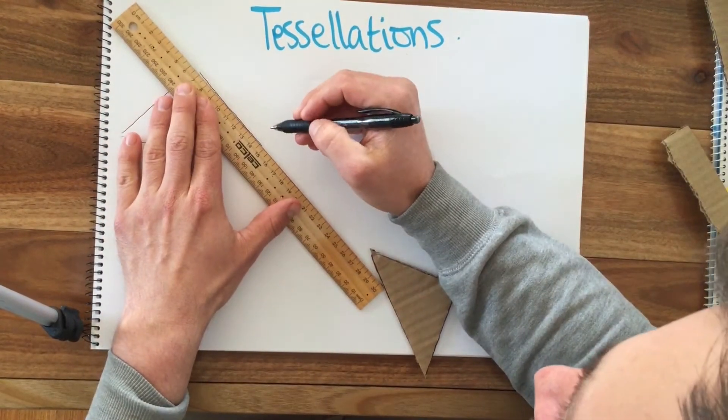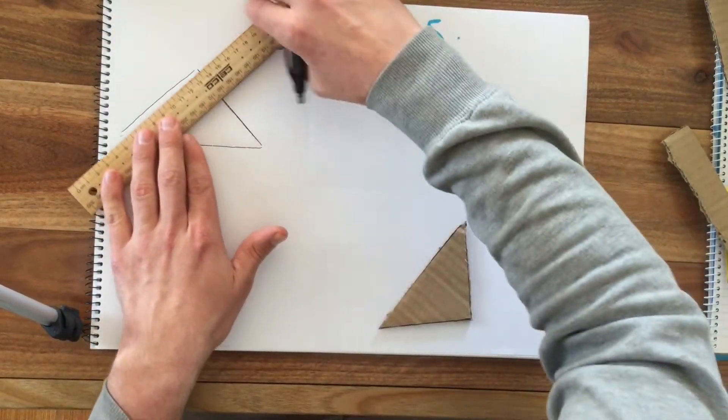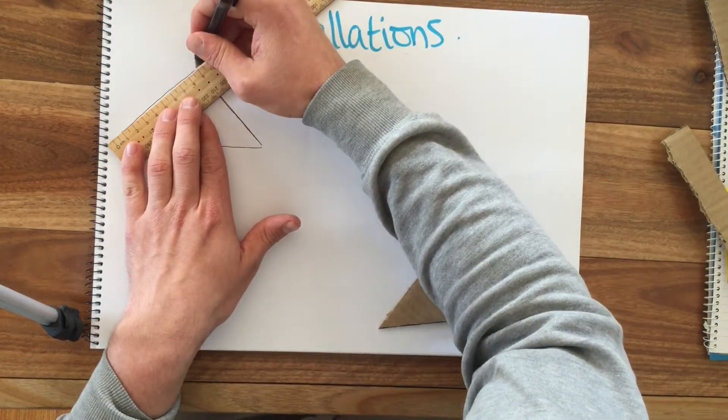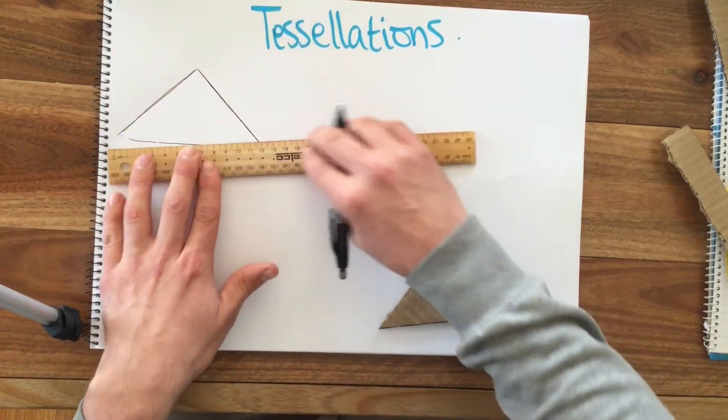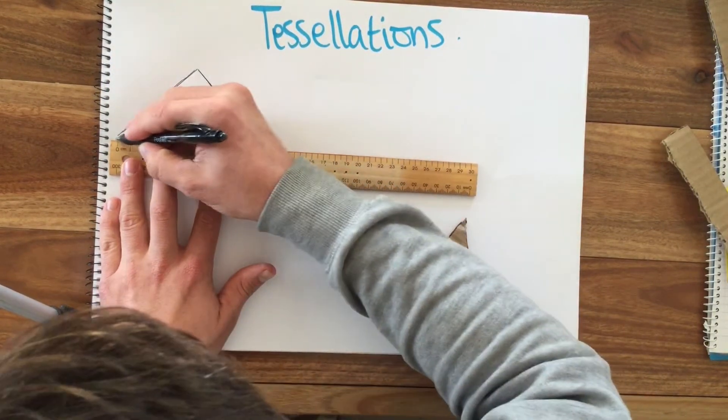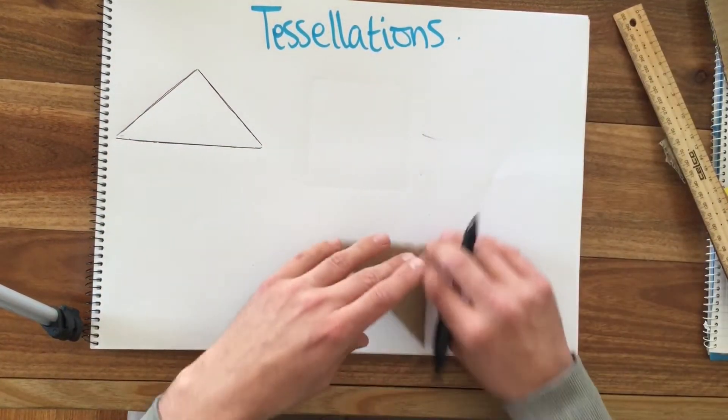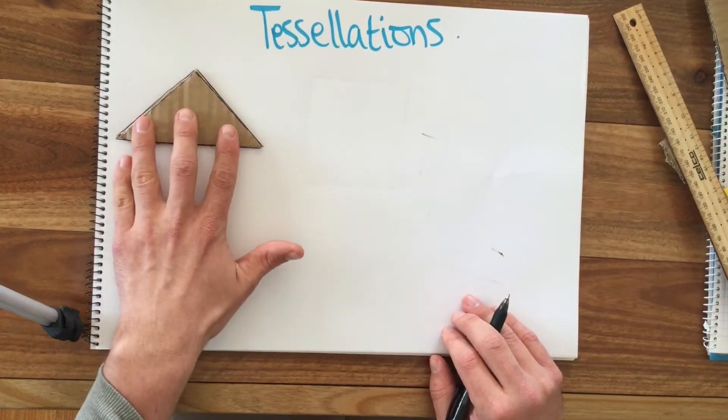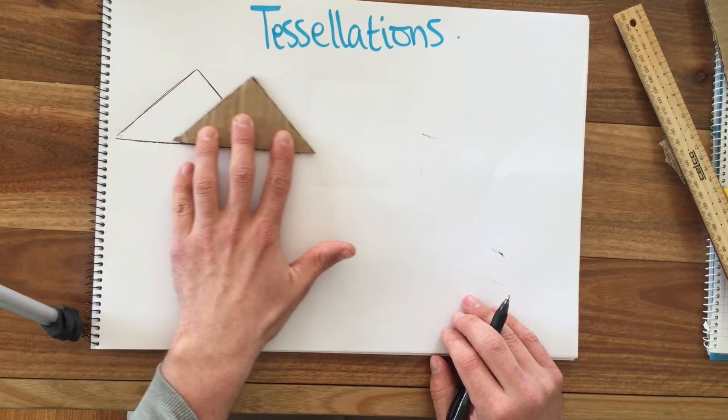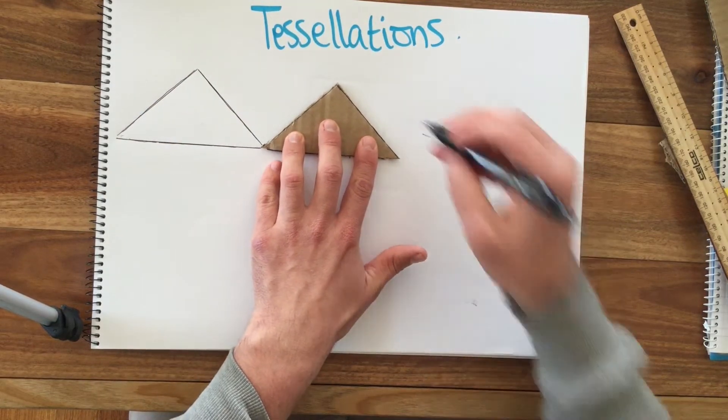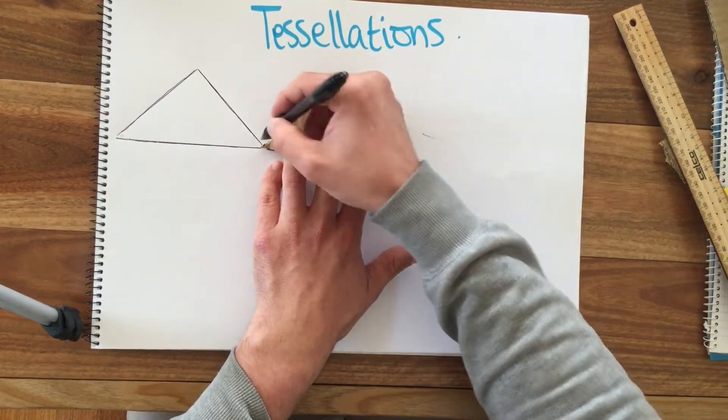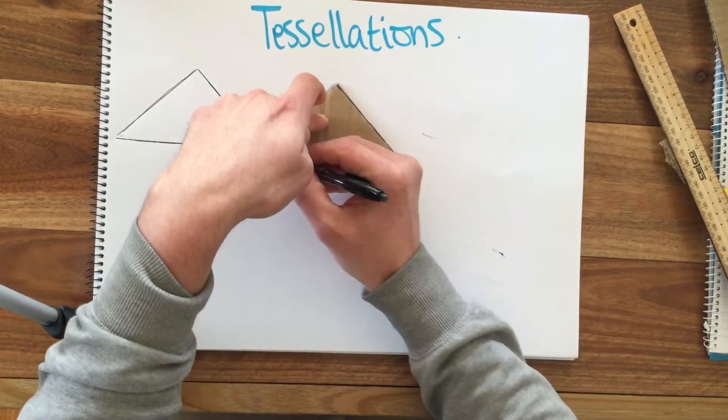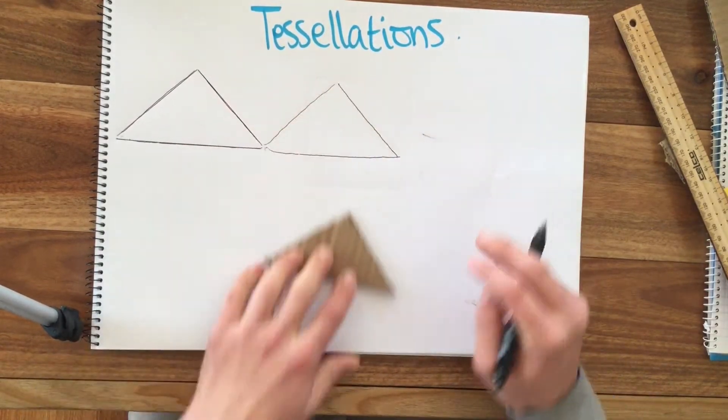When you go over it later you can use your ruler so it's a little bit neater. Now using our transformations, I can use a translation which is moving in a straight line to another location - same size, same shape, same everything, just translated from one area to the next.